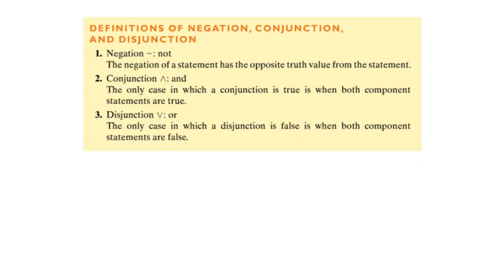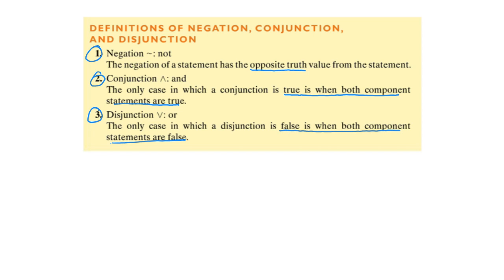In review: for negation, the statements have the opposite truth value. The conjunction is true only when both components are true — otherwise everything else is false. For disjunction, it is false when both component statements are false, meaning any other scenario is true. If you remember these special conditions, you have less to memorize.